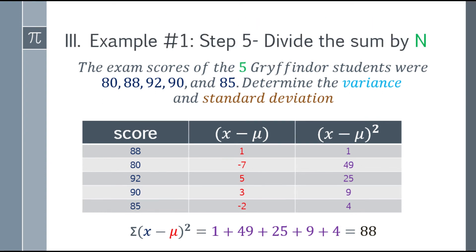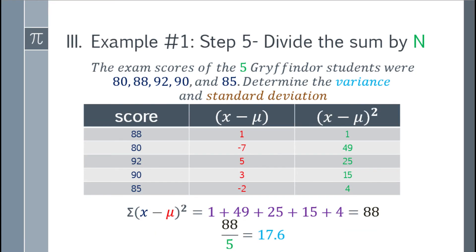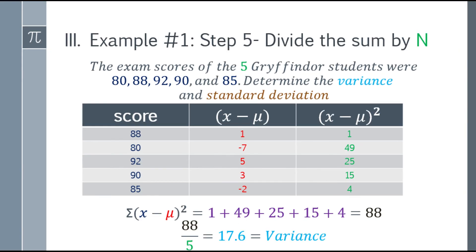Okay. Next one. We need to divide the sum by n, or the population size. So our population size here is 5. So 88, divide by 5, that will be 17.6. And that's already the variance.